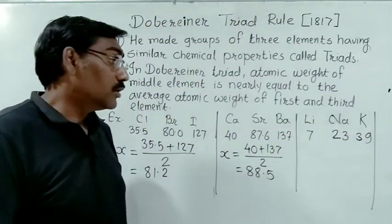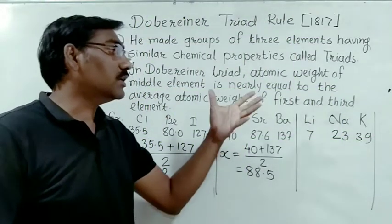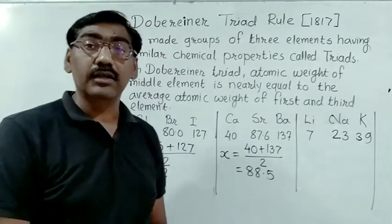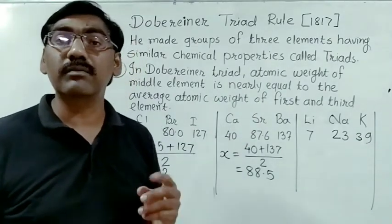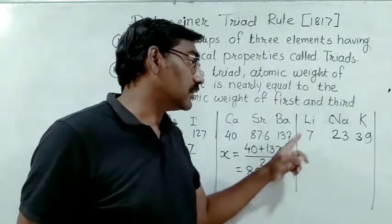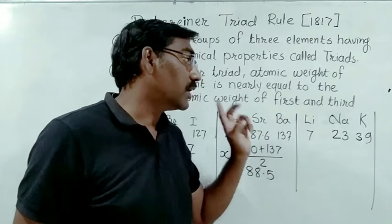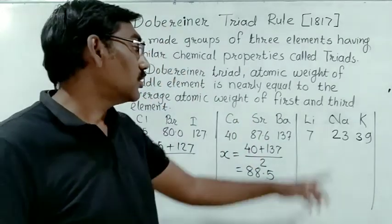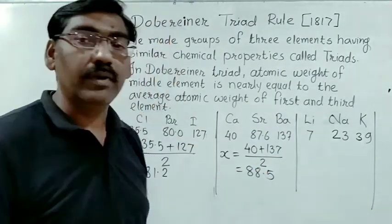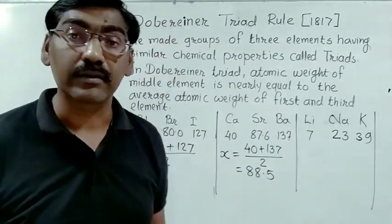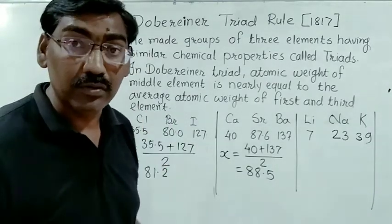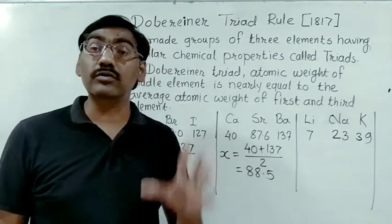Another triad given by Dobereiner is Lithium (Li), Sodium (Na), and Potassium (K). The atomic weights are: Lithium = 7, Sodium = 23, and Potassium = 39. According to Dobereiner's Triad Rule, we can verify this grouping.